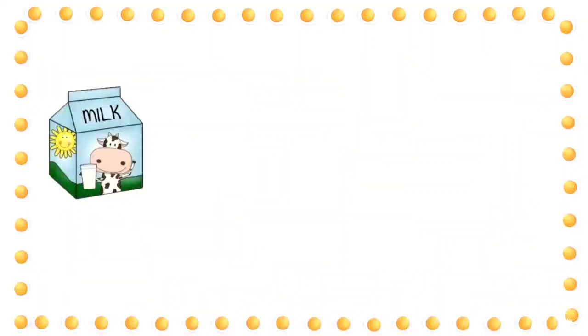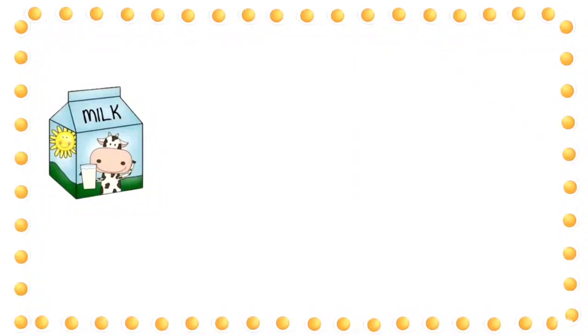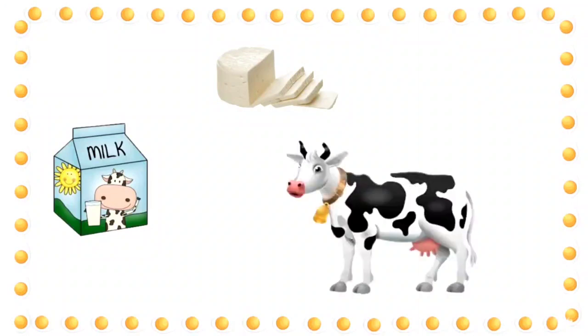What is this? A carton of milk. And this? Paneer. Children can you tell me from what do we get milk and paneer? We get milk and paneer from cow. What's this? An egg. From where do we get egg? We get egg from hen.